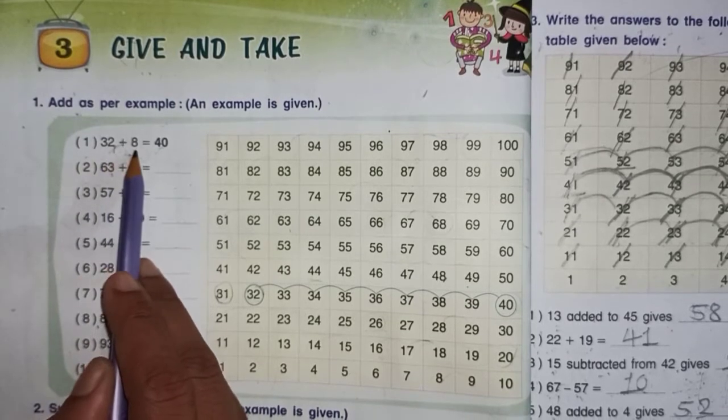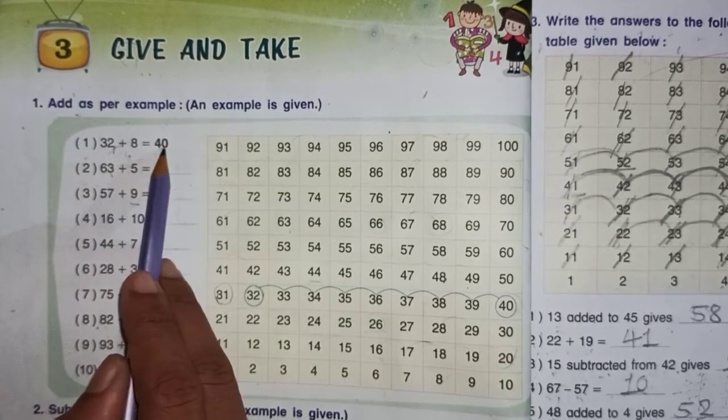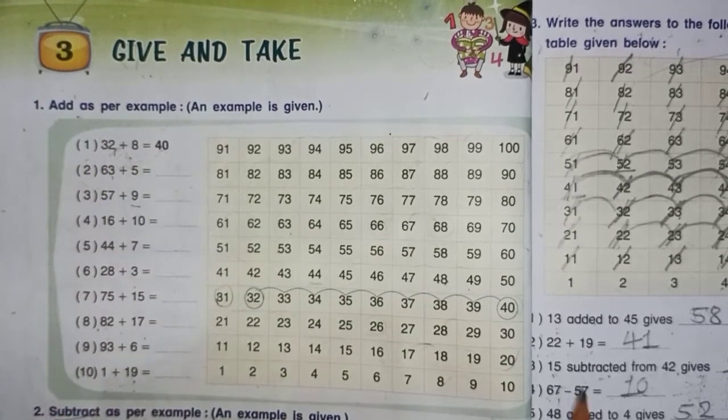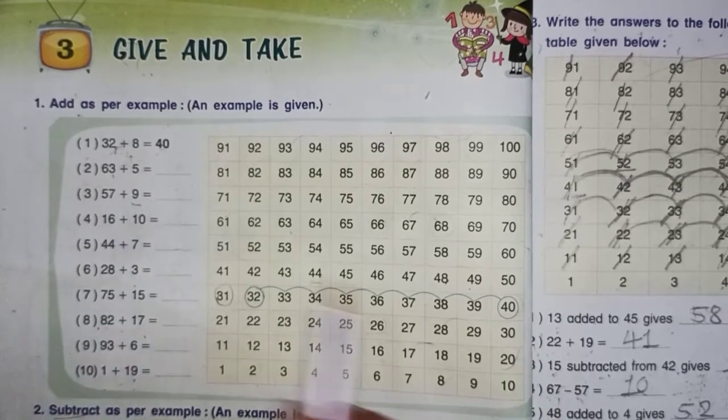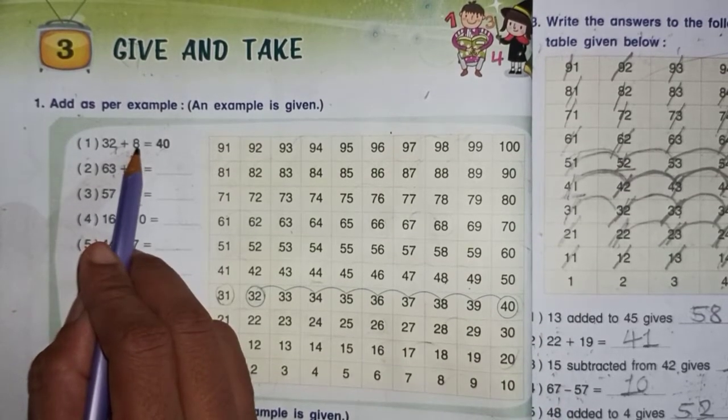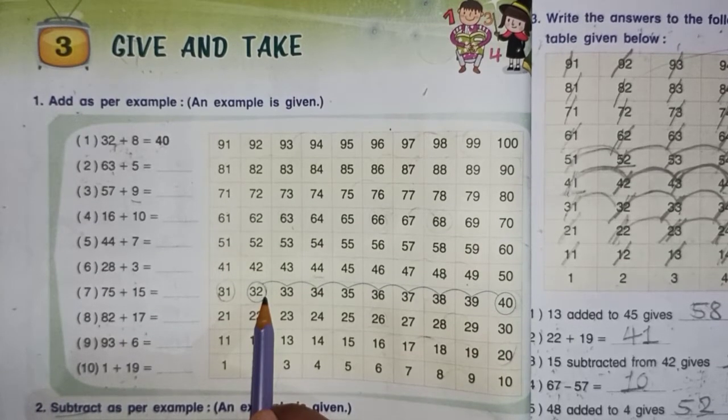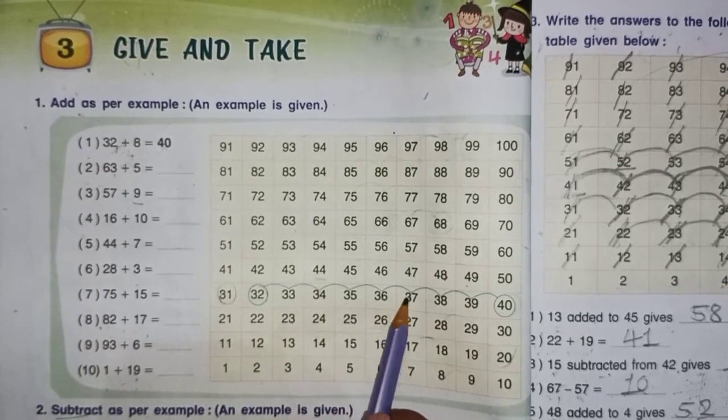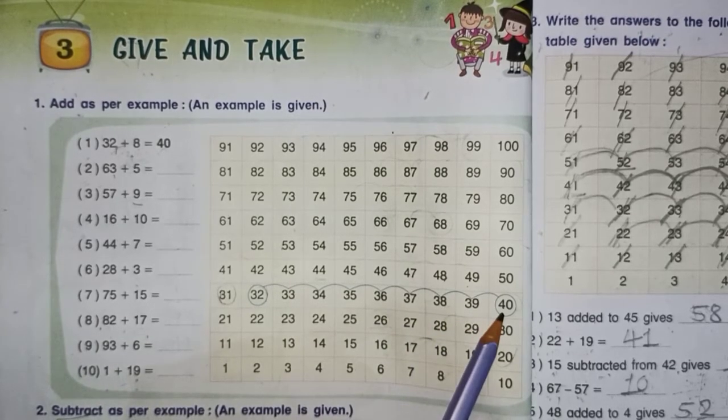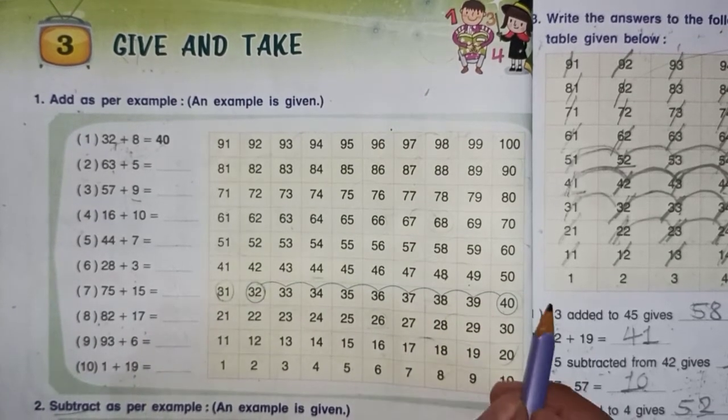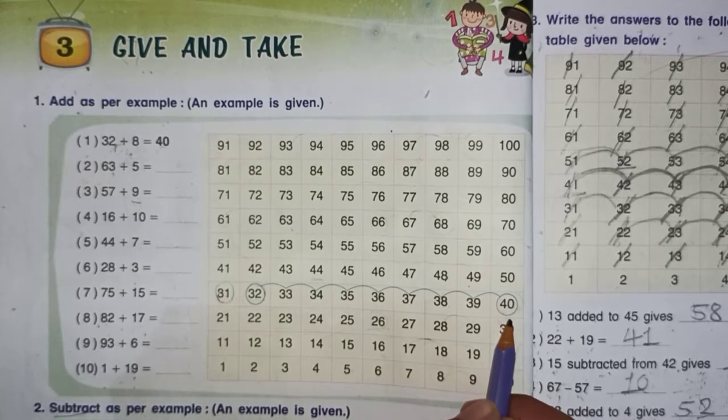32 plus 8 equals 40. How did this happen? First, 32 plus 8, add as per example. Count 1, 2, 3, 4, 5, 6, 7, 8. So our answer is equal to 40.